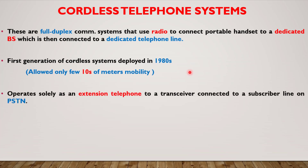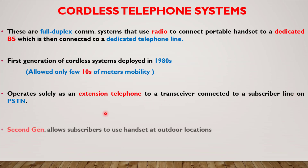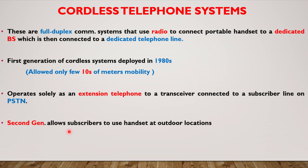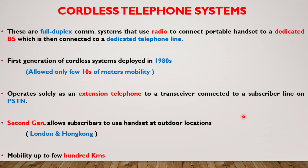These handsets operate solely as an extension to your landline phone transceivers at home — cordless phones work as an extension to your landline connected to a subscriber line on the PSTN network. The second generation allowed subscribers to use handsets at outdoor locations, giving users the feel of mobile service. This second generation was first deployed in London and Hong Kong and was able to provide mobility support up to a few hundred kilometers.